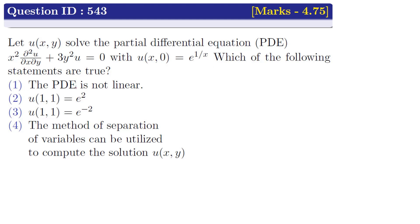Option 1: the partial differential equation is not linear. Option 2: the value of u at (1,1) is e². Option 3: the value of u at (1,1) is e^(−2). Option 4: the method of separation of variables can be utilized to compute the solution u(x,y). Now, first we discuss Option 1. A PDE is said to be linear if the dependent variable and all its derivatives occur in linear form. Our equation satisfies this condition, so the given PDE is linear. Therefore Option 1 is false.